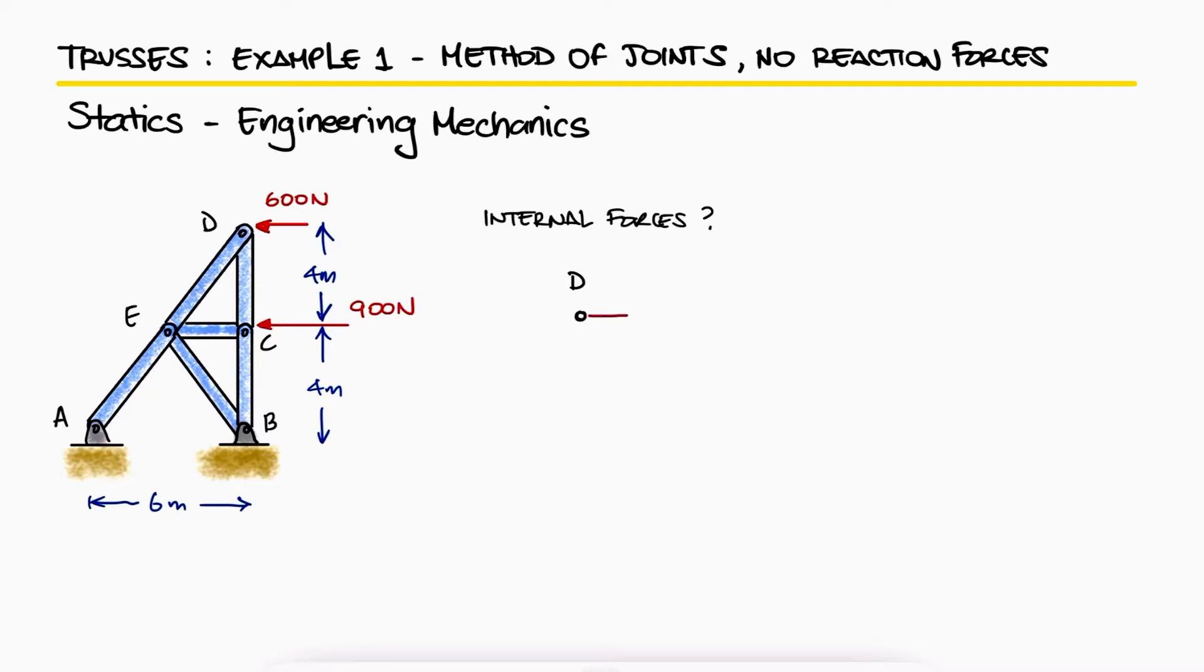If in this case we begin at joint D and assume all internal forces to be in tension, like suggested during the main video, we see that a sum of forces in X allows us to solve for FDE. Because of the negative sign, we know that member DE is subjected to compression.